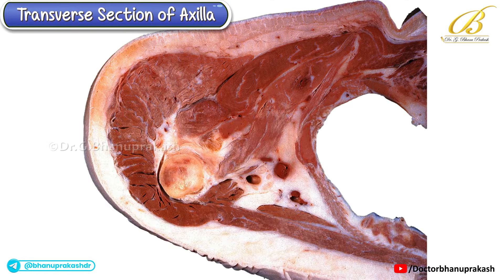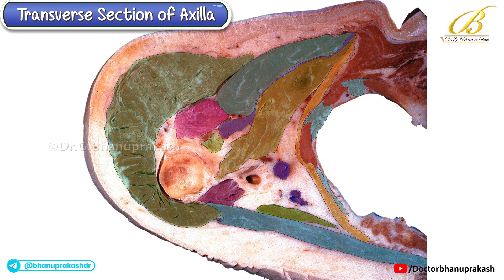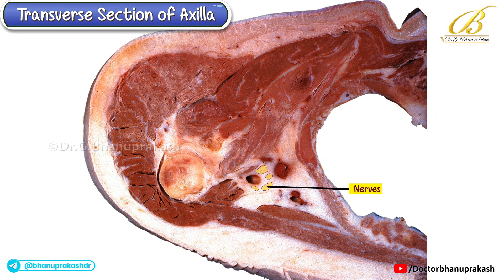Hello, everyone. Today I'm going to demonstrate the transverse section of the axilla. Identifying structures in a transverse section can be a bit challenging compared to an anterior view, as the muscles appear intermingled in cross-section. So to make sense of this image, let's begin by locating the nerves, vessels, and the surrounding pad of axillary fat. These indicate the main contents of the axilla.